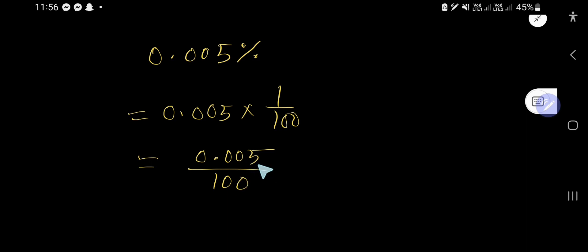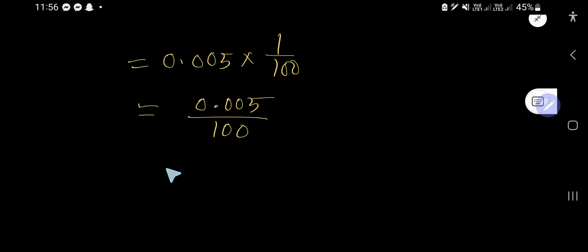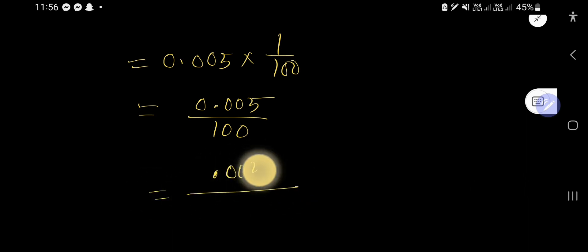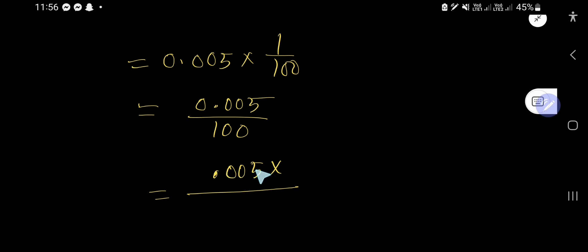The numerator is a decimal number and the denominator is a whole number. Our target is to make the decimal a whole number. Count the decimal places: one, two, three — so we need to push the decimal point three digits to the right, meaning we multiply by 1000.